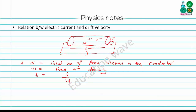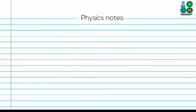The total number of free electrons N is equal to A·L·n. The current through the conductor can be given as I = Q / T.